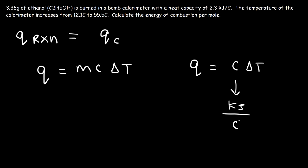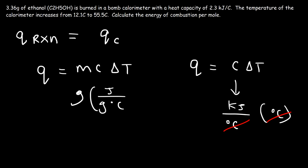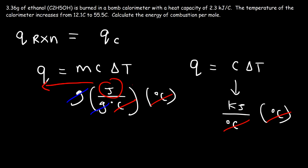Multiplying kilojoules per Celsius by the temperature change in Celsius gives energy in kilojoules, which we'll later divide by moles. With specific heat capacity, c has units of joules per gram per Celsius, so you multiply by mass m to cancel grams, then multiply by ΔT to cancel Celsius, giving you joules or kilojoules.